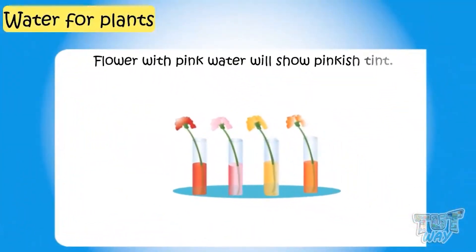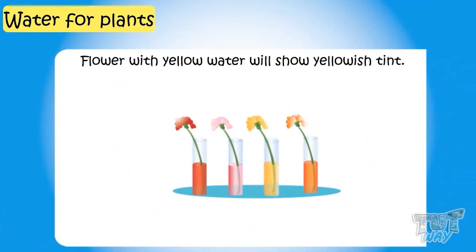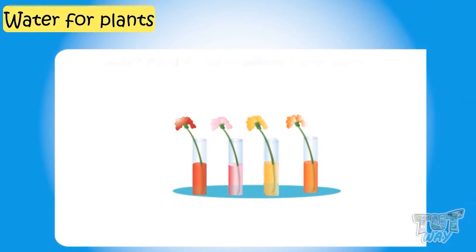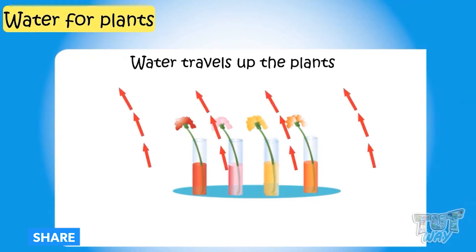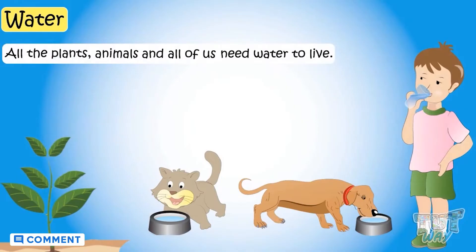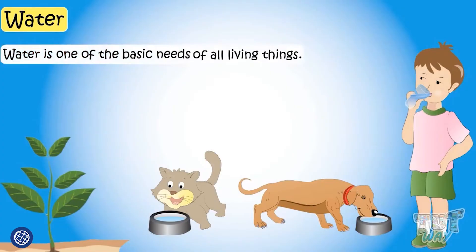Flowers with pink water have a pinkish tint, and flowers with yellow water have a yellowish tint. All flowers have some shade of the color added to their water. That shows that water travels up the plant. All plants, animals, and all of us need water to live. So water is one of the basic needs of all living things.